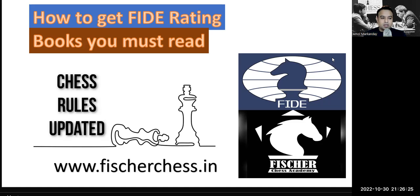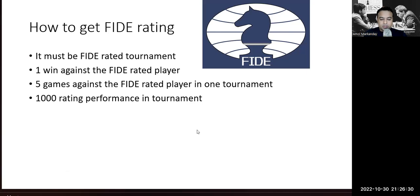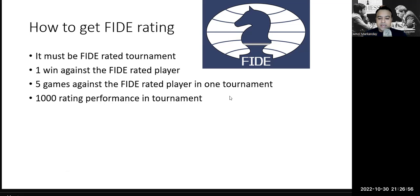We'll start with how to get a FIDE rating. There are very simple rules. First, you must play in a FIDE international rating tournament — if you see the FIDE logo mentioned in a circular, it is a FIDE international rating tournament. Second, you must have at least one win against a FIDE rated player. After that, you have to play five games against FIDE rated players in one tournament.